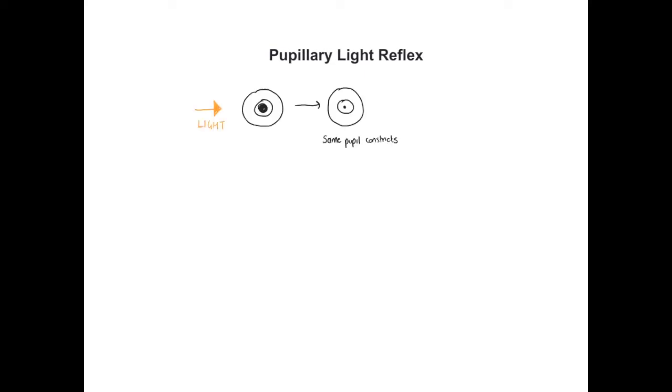In this short video, we're going to look at the pupillary light reflex — the reflexive action of the pupils constricting in response to a light stimulus. There are two parts to the pupillary light reflex. The first is the direct pupillary light reflex, where a light stimulus directed onto one eye causes that same eye's pupil to constrict.